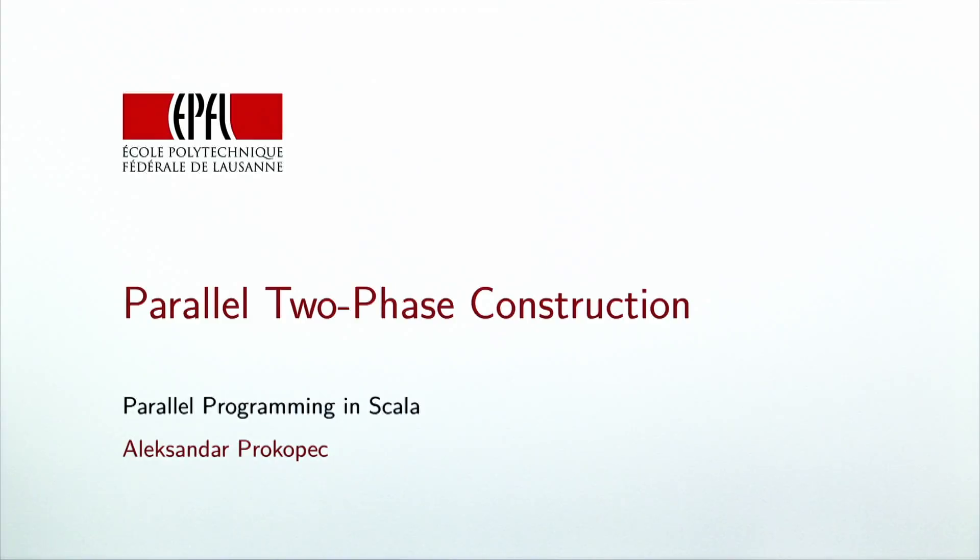In the last lecture, we learned that constructing data structures in parallel requires an efficient combine operation. We saw that for most data structures, the combine operation cannot be implemented efficiently. This lecture has a more constructive character. We will learn about parallel two-phase data structure construction, a technique used to implement combiners efficiently.